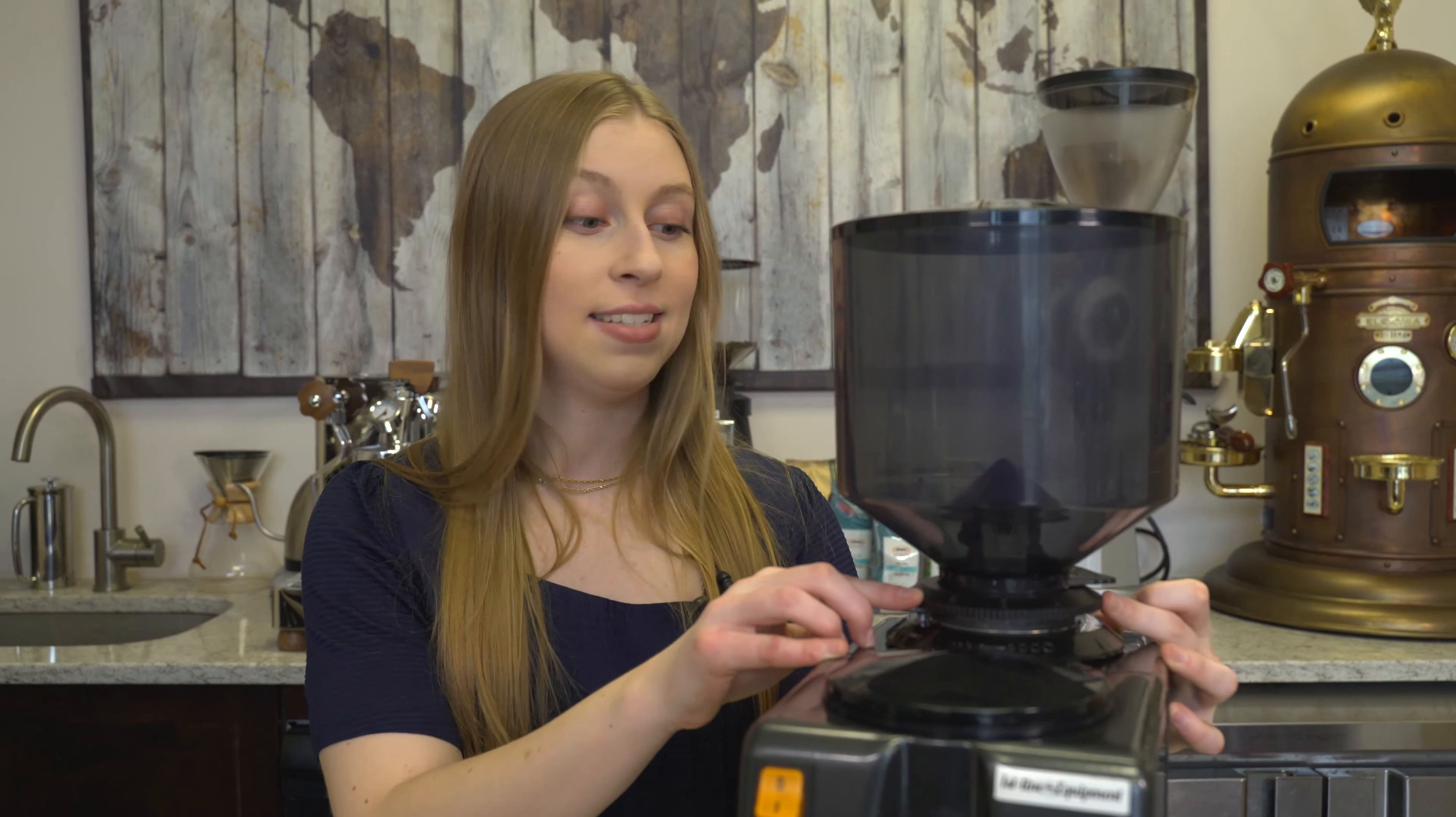The Michael has a large capacity bean hopper that holds a standard kilo bag of whole bean coffee. You'll also notice it's tinted to prevent premature aging of the beans.